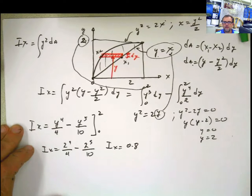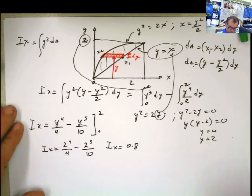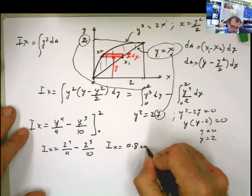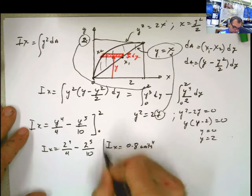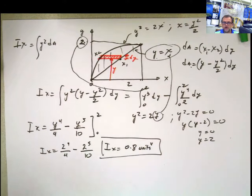Units to the 4th. Those are the units. I don't know the units, I don't have any units. This problem doesn't have any units, so units to the 4th. Okay. Watch the next one because in the next one I'm going to show how to do Iy for the same problem. See you later.